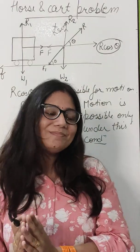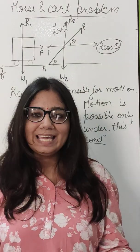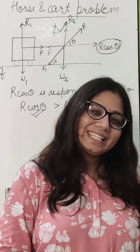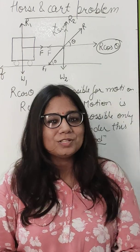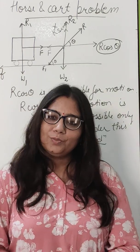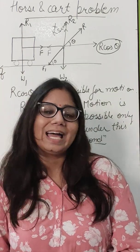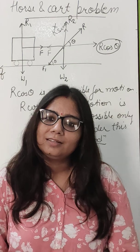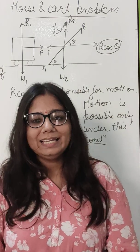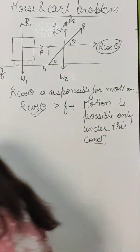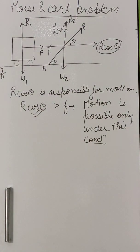So in the horse and cart problem, we can see that the component R cos theta is responsible for the motion of the horse and cart. I think this is very much clear to you. Thank you!